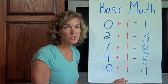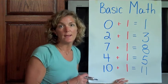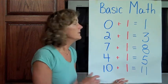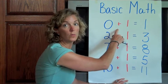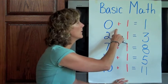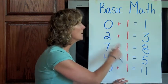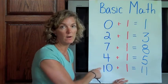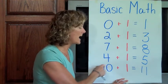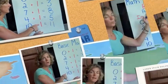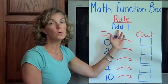In a math function box, let's say maybe someone got lazy and they didn't want to keep saying or writing plus 1 for each problem. But they wanted to give you a number and automatically have you add 1. In the math function box, you have rules.